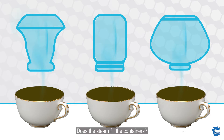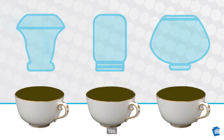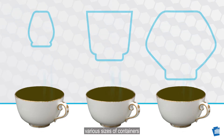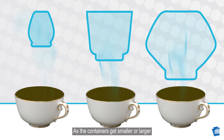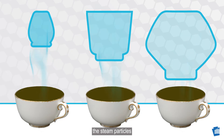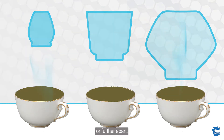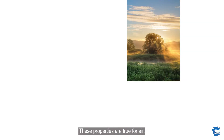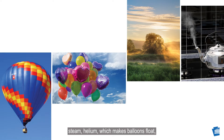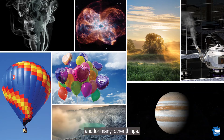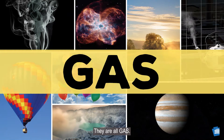Does the steam fill the containers? Yes. The steam fits various sizes of containers because the steam particles can compress closer to each other. As the containers get smaller or larger, the steam particles just get closer together or further apart. These properties are true for air, steam, helium — which makes balloons float — and for many other things. They are all gas.